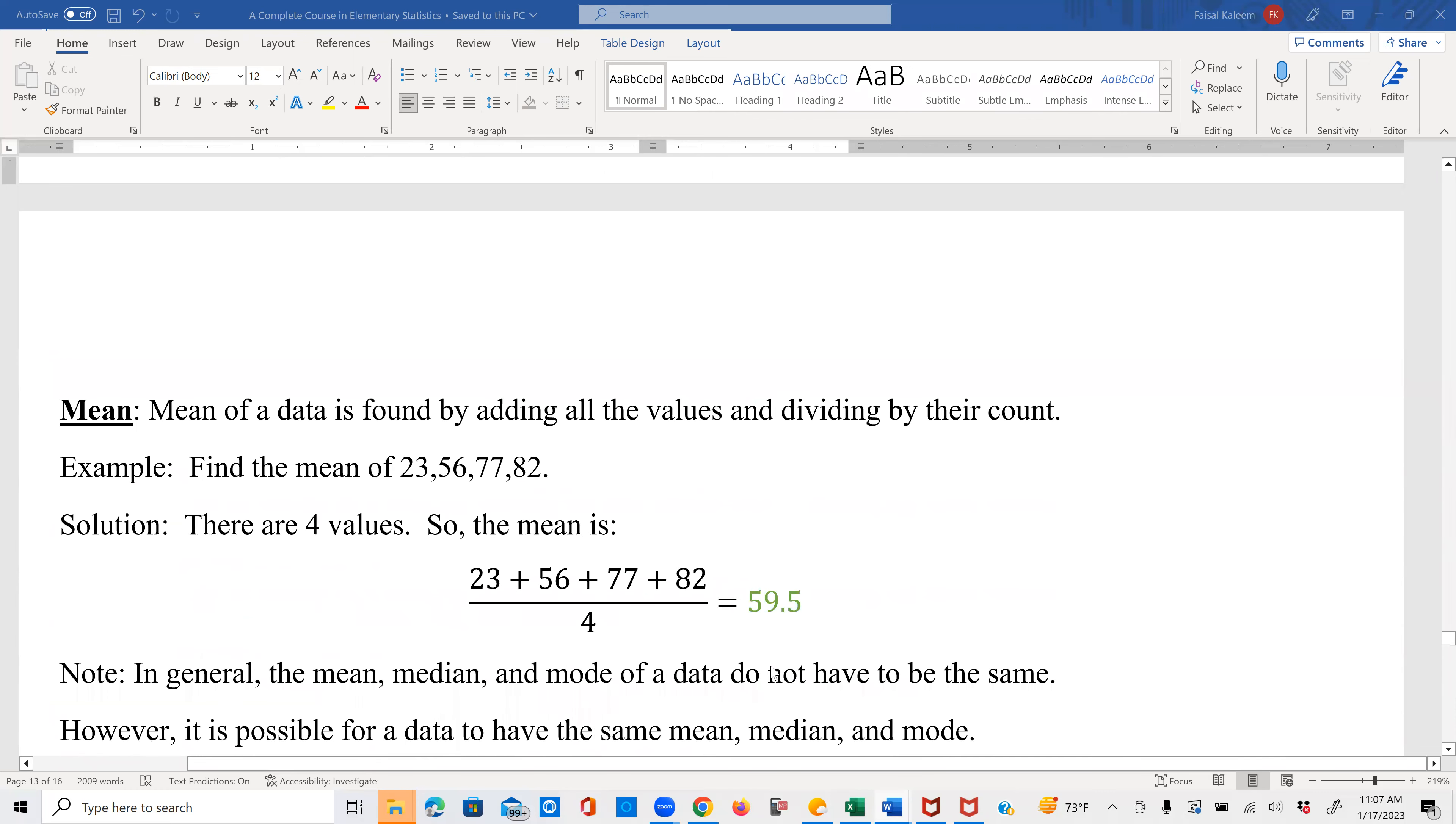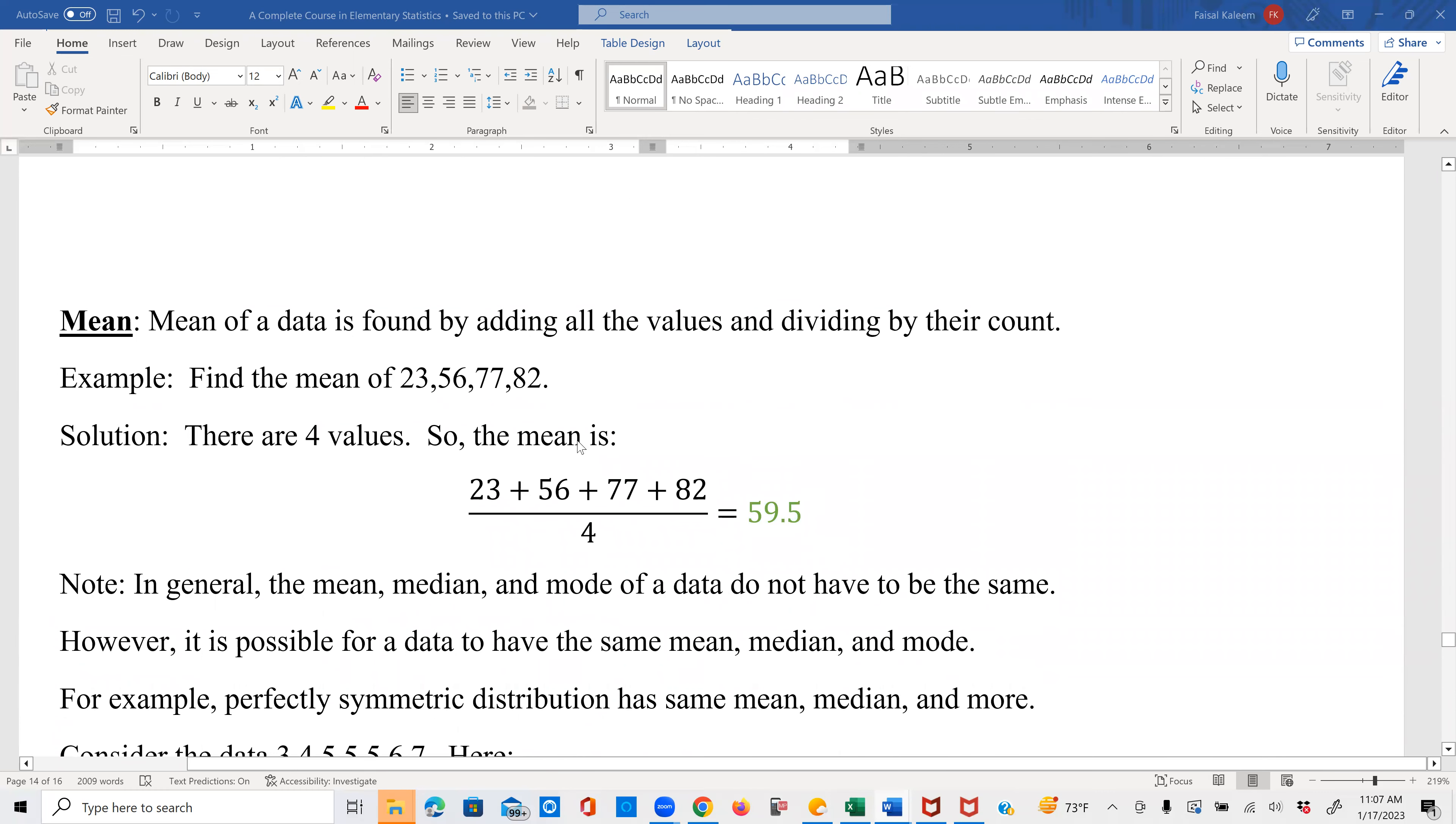Mean. Mean of a data is found by adding all the values and dividing by their count. For example, if we have to find the mean of these four numbers, 23, 56, 77, and 82, we will add them and divide by four, so you get 59.5.